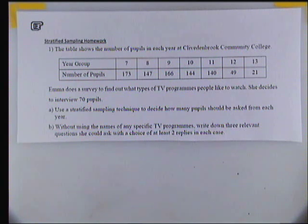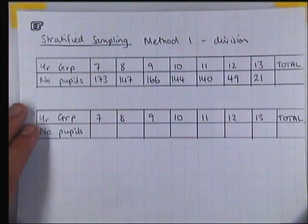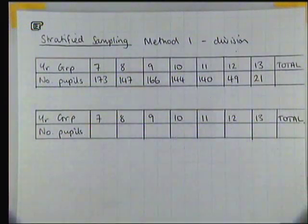I'm going to highlight two different methods that you can use to keep the proportions the same while making the total equal to 70. Here I've summarized the data. I'm going to call this method just straight division.